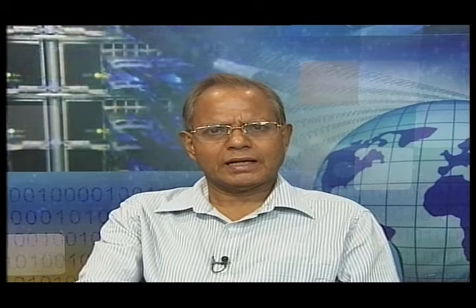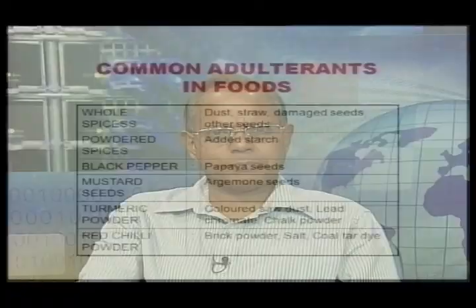In whole spices, dust, straw, damaged seeds, and other seeds are added. In powder spices like chili, added adulterants include starch, papaya seeds, mustard seeds, argemone seeds, turmeric powder, color, straw, dust, lead chromate for coloring purposes, chalk powder, etc.